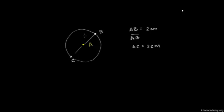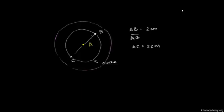And this set of all of the points that are exactly 2 centimeters away from A — this is a circle, as I'm sure you are already familiar with. But that is the formal definition: the set of all points that have a fixed distance from A. If I said the set of all points that are 3 centimeters from A, it would give us another circle. Now what I want to do in this video is introduce ourselves to some of the concepts and words that we use when dealing with circles.